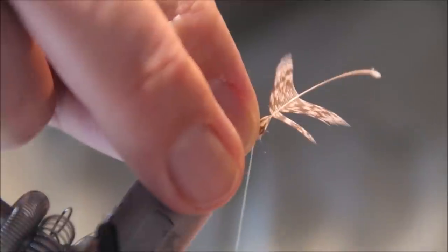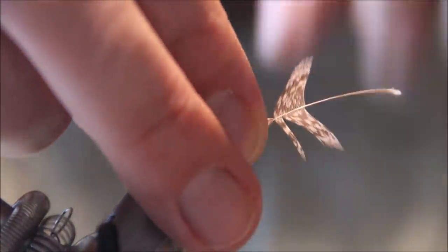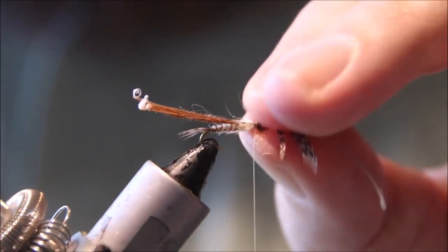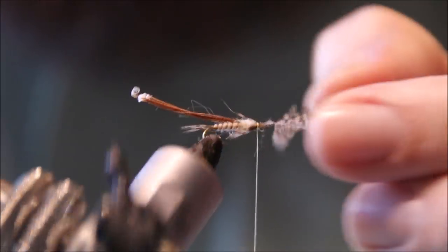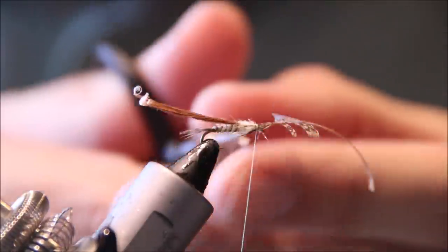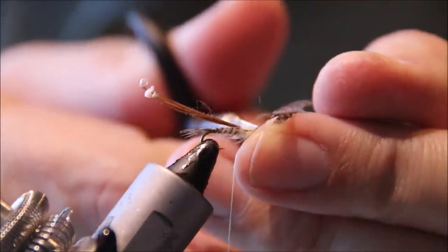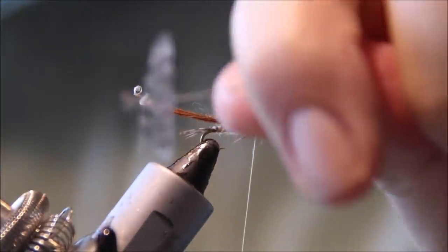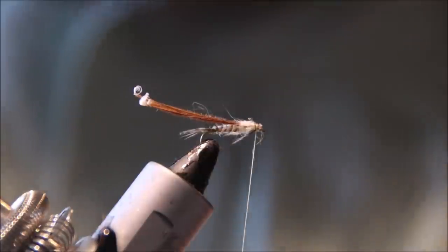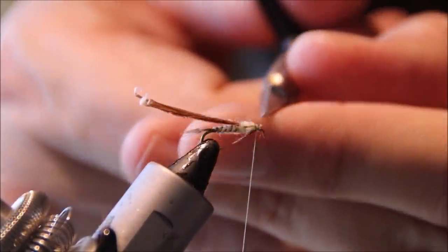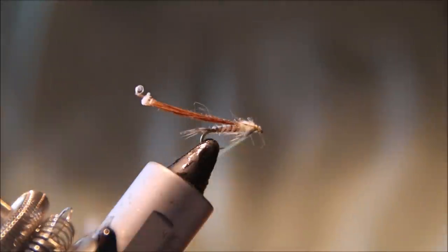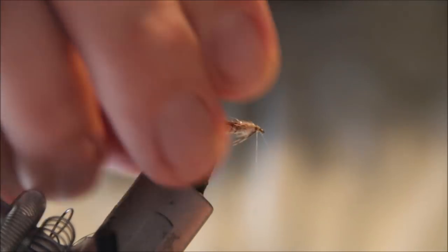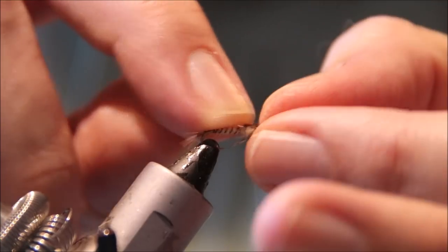I'm going to fold the feather so it's on either side of the thorax, then pinch and loop it in. That will give you a nice expression of legs on either side. You've still got another fly left in this feather. Trim away the waste, tie it down, then take the thorax cover over.